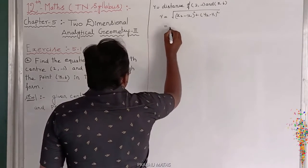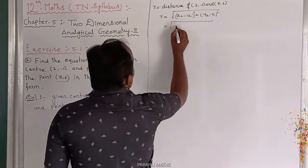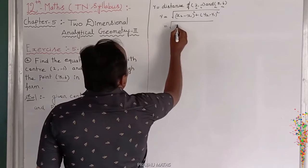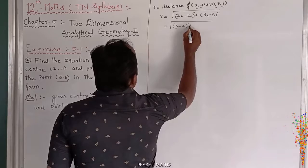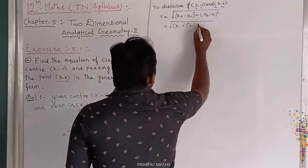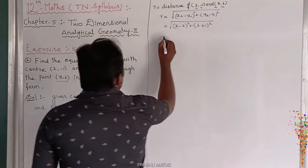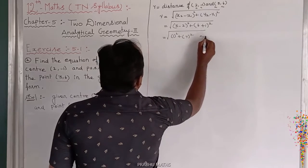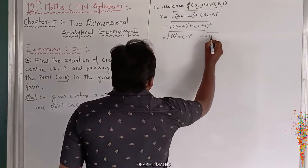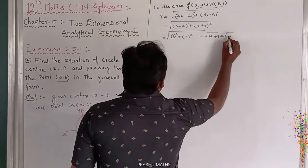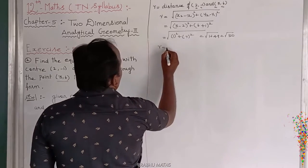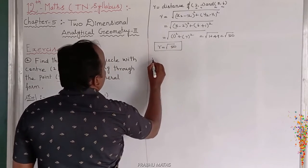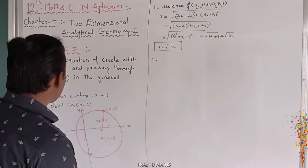Using the distance formula with (x₁, y₁) = (2, -1) and (x₂, y₂) = (3, 6): r = √[(3 - 2)² + (6 + 1)²] = √[1² + 7²] = √[1 + 49] = √50. So the distance between the two points is √50.